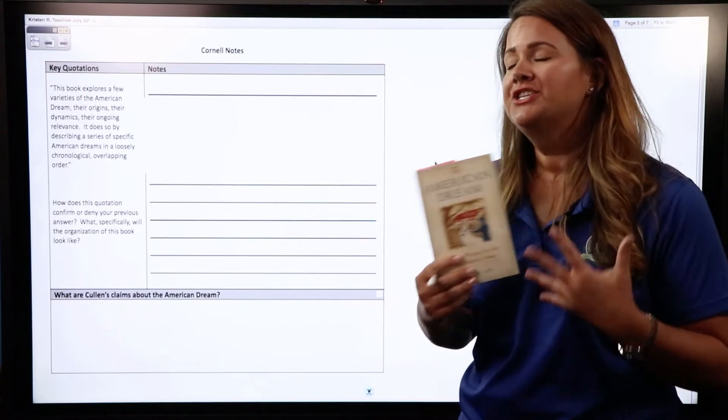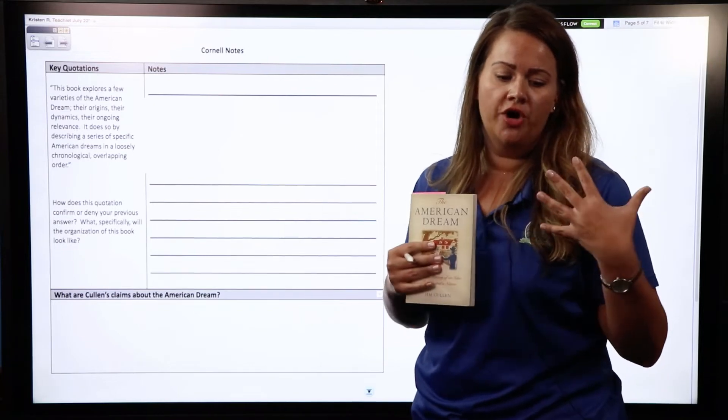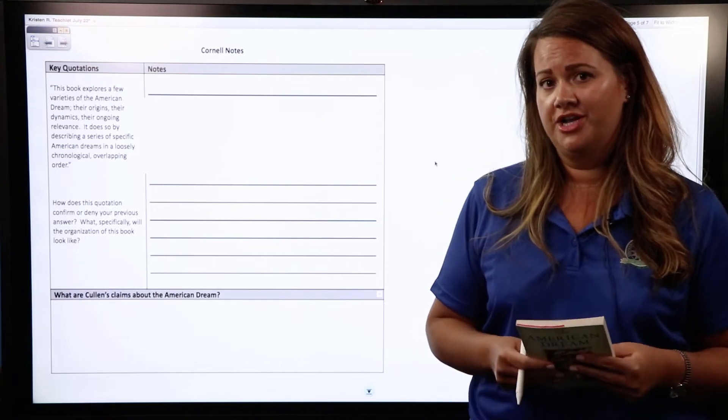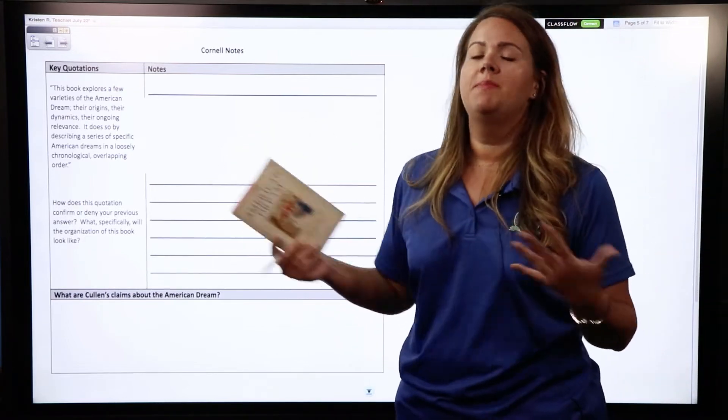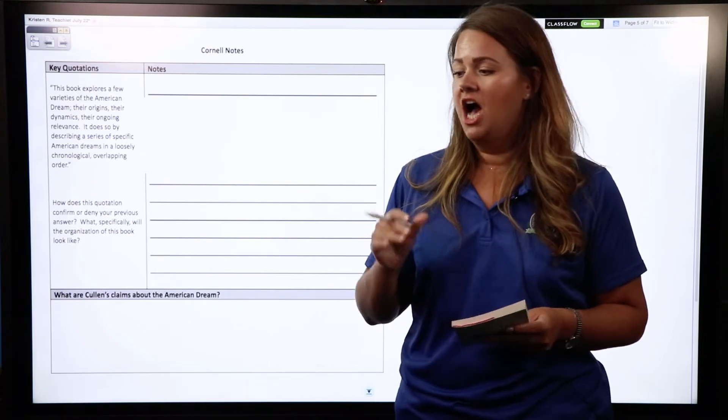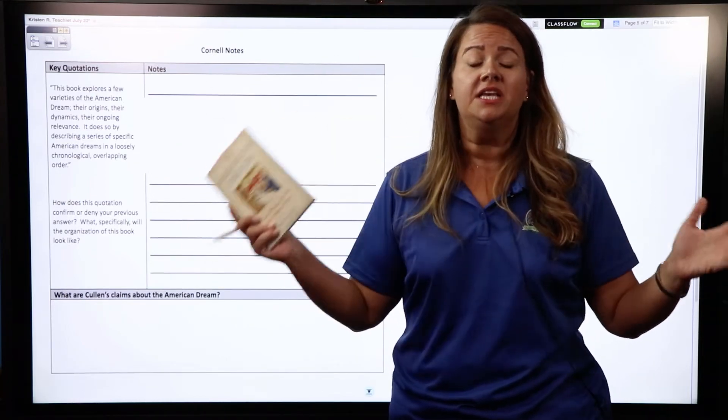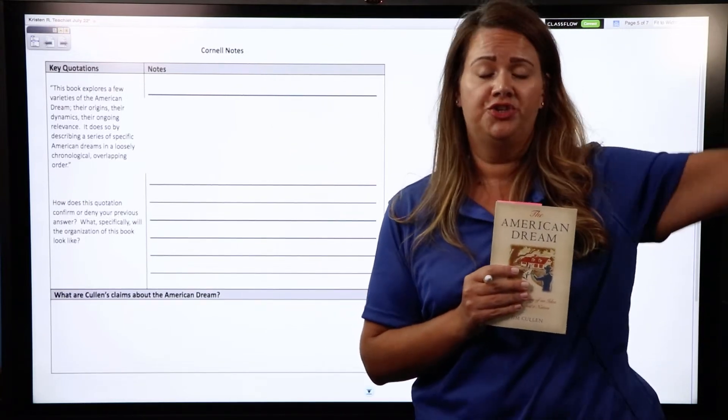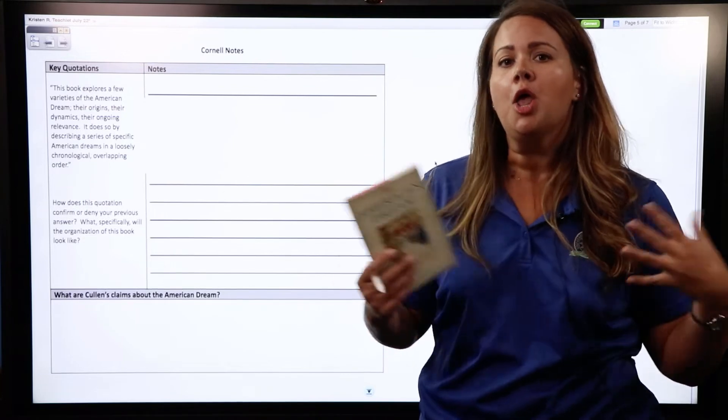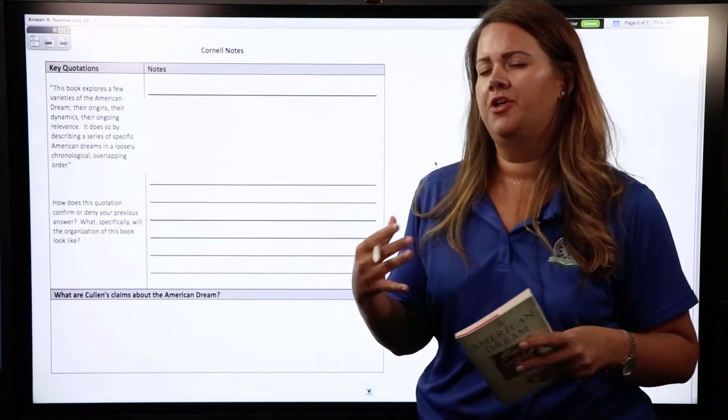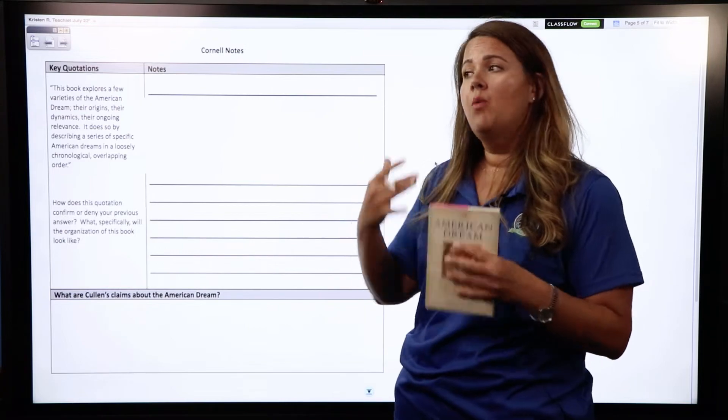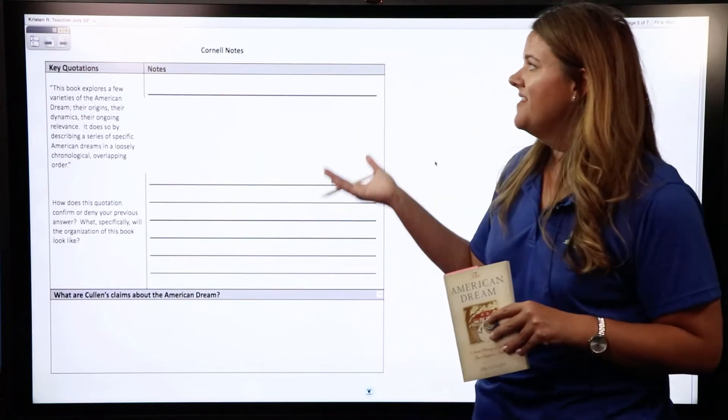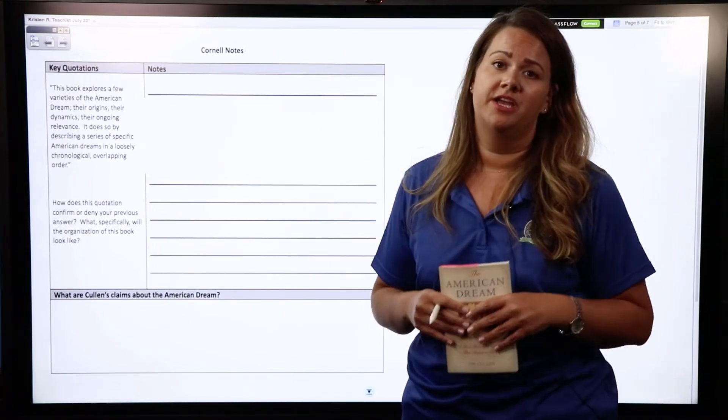Some keywords on that quote were variety. There was a lot of variety in these ideas of the American dream. So I'm sure many of you said, well maybe we'll get different stories about the American dream, different perspectives, different people's experiences. Maybe it'll show us people's experiences from past history, maybe we'll have some that are more contemporary. But if you wrote anything about there being variety to the American dream, I want you to think about that now when you encounter this quote that this book explores a few varieties of the American dream, the origin of the dream, the dynamic of the dream, and the ongoing relevance.